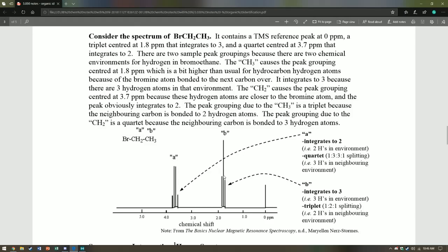This is a triplet and this is a quartet. This quartet here corresponds to A. Since this is a triplet, we know that there's three hydrogens in the neighboring environment. And here, since there's three peaks, 3 minus 1 is 2, there's two hydrogens in a neighboring environment, and that corresponds to A. So this peak here, its splitting corresponds to A, and A's splitting corresponds to B.